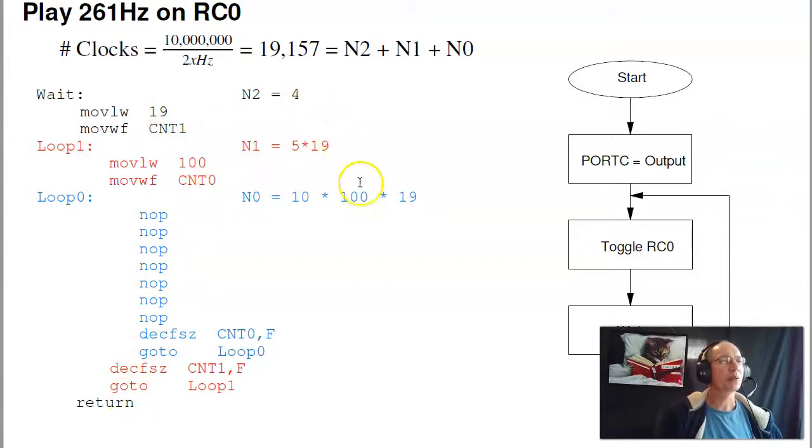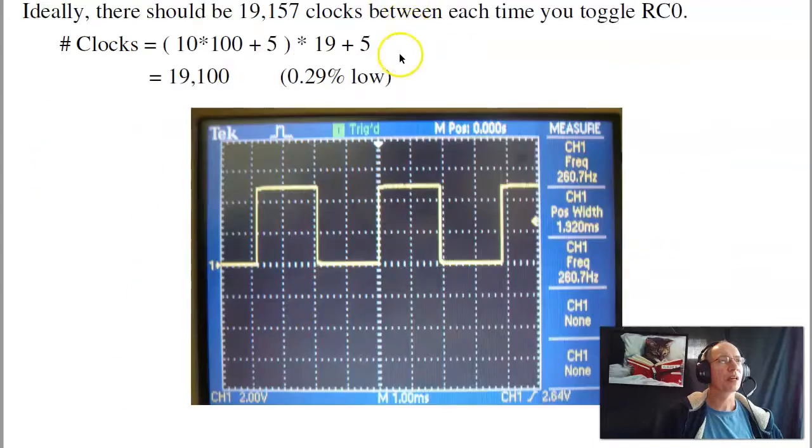The total number of instructions is going to be N1*10 + N1 + N2. The trick is to come up with these numbers, 19 and 100, so that the total is close to 19,157. The limitations. This is an 8-bit processor. These numbers cannot be bigger than 255. The biggest number you can store with an 8-bit processor is 255. Can't be less than zero, of course. And they have to be integers. So play with these numbers until you get to something close. 19 and 100 are fairly close.